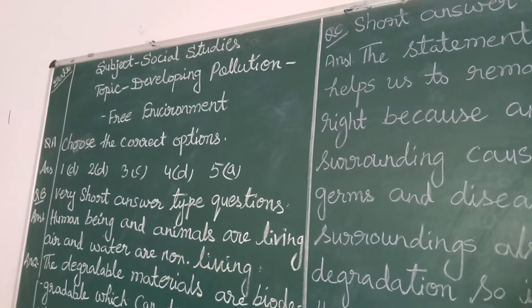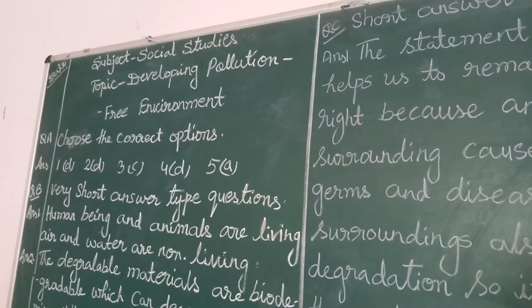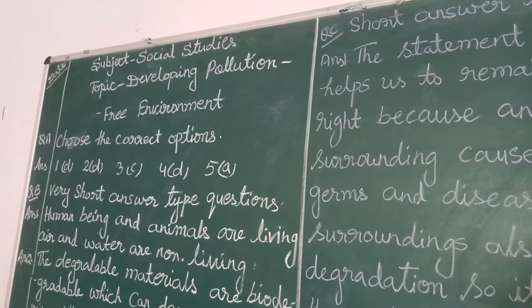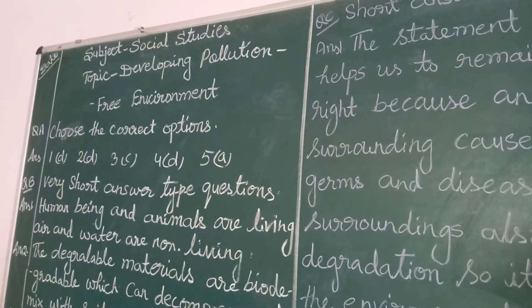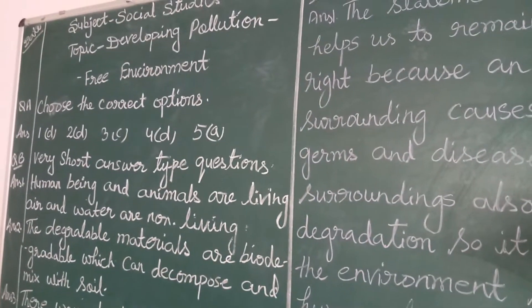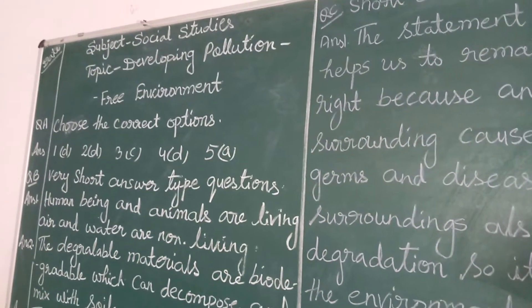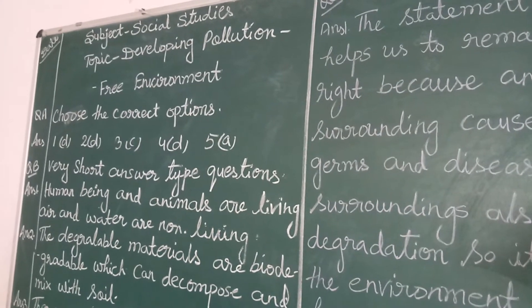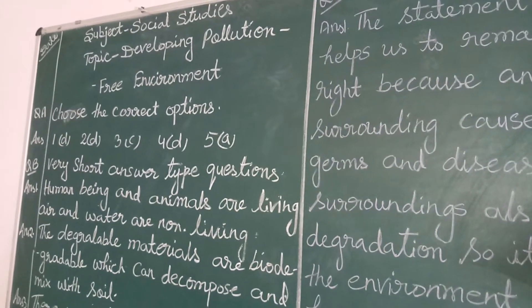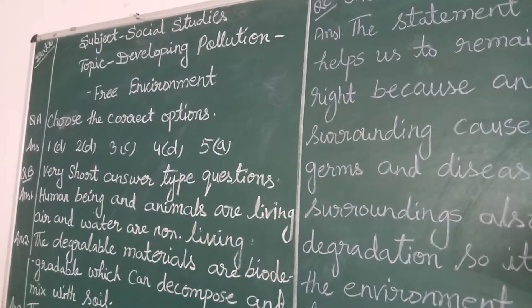Question number 2. A clean and dirty surrounding causes — answer number 2: all of these — germs, diseases, environmental degradation. The correct answer is number 2: all of these.